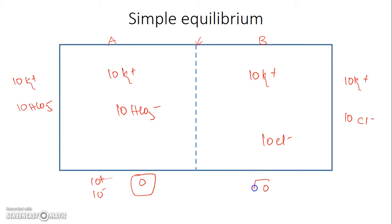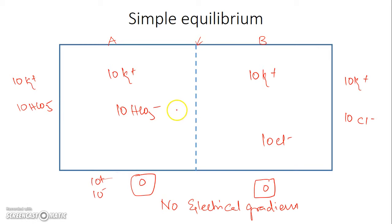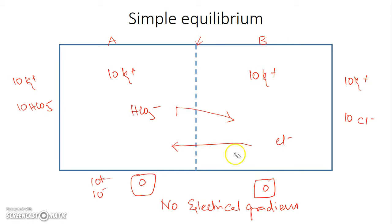So there is no electrical gradient at this point, but what is present is a concentration gradient of bicarbonate and chloride ions. Bicarbonate has a high concentration on side A so it moves towards side B, whereas chloride moves from side B towards side A. After equilibrium, bicarbonate and chloride will both equally distribute on both sides.